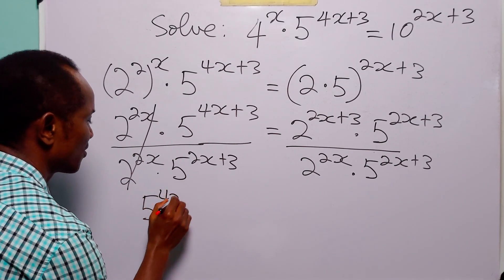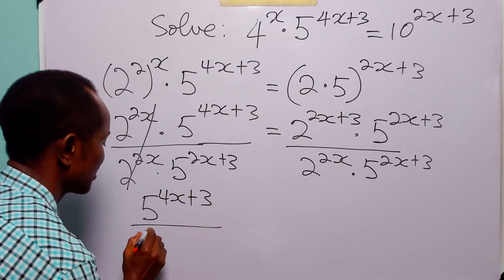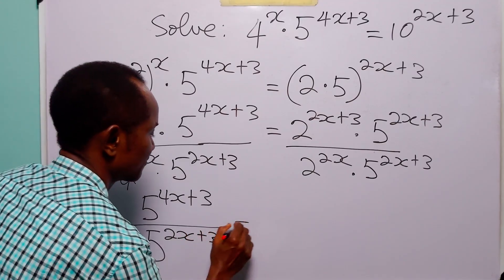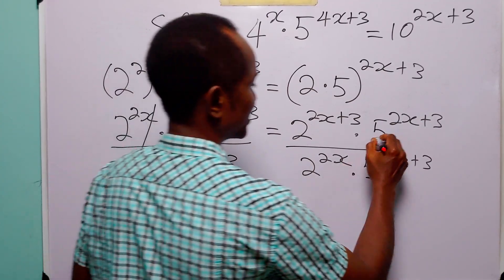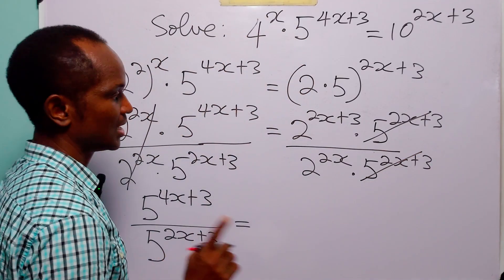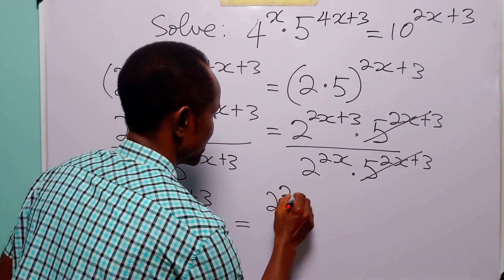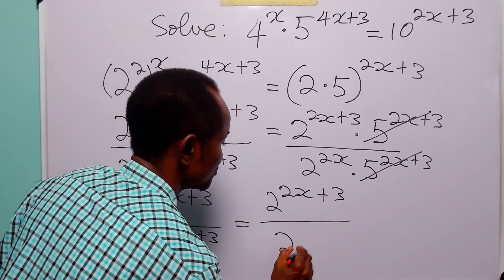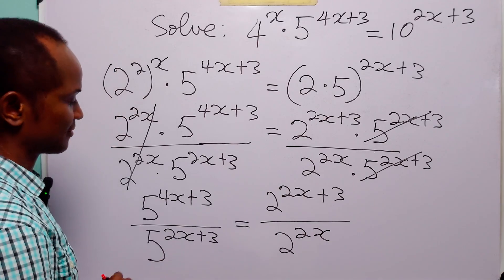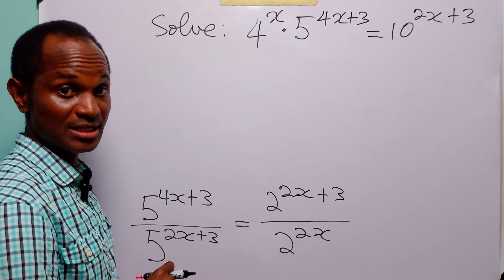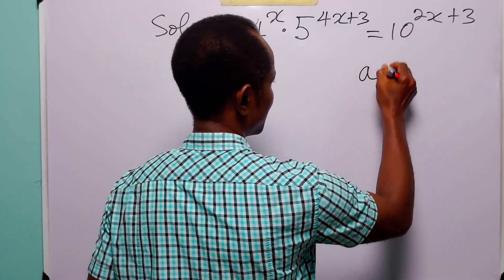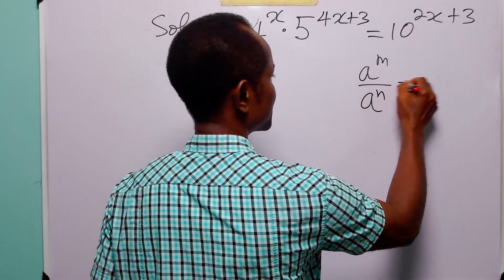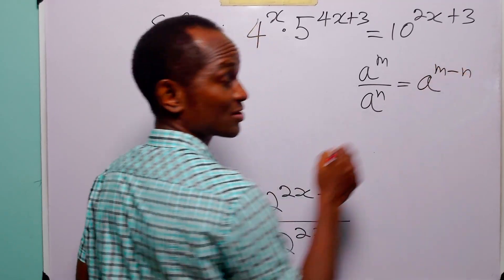On the left hand side, this leaves us with 5 to the power 4x plus 3 over 5 to the power 2x plus 3. And on the right hand side, this leaves us with 2 to the power 2x plus 3 divided by 2 to the power 2x. To further simplify, we must remember that a to the power m divided by a to the power n is equal to a to the power m minus n.